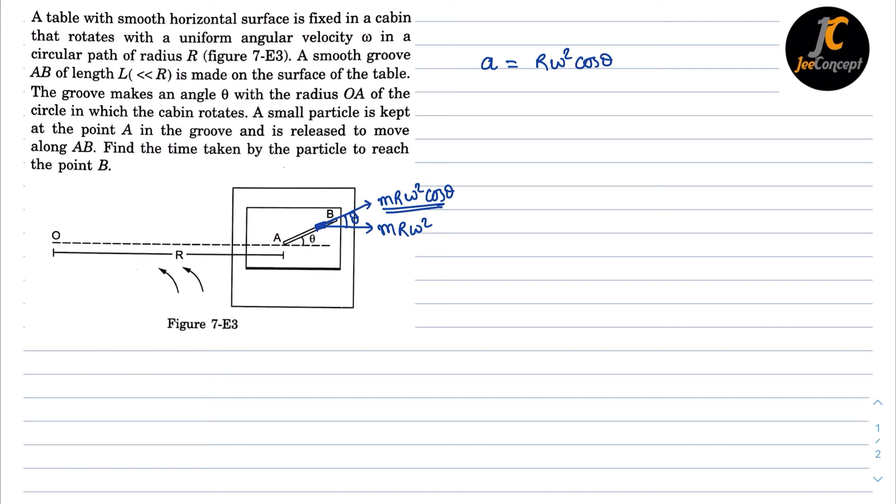Right? Now we have to travel a distance L and the initial velocity was 0. So L equals ut plus half a t square. So this will become half of A, which is R omega square cos theta times t square. So t will become square root of 2L upon R omega square cos theta. So this is the solution of this problem.